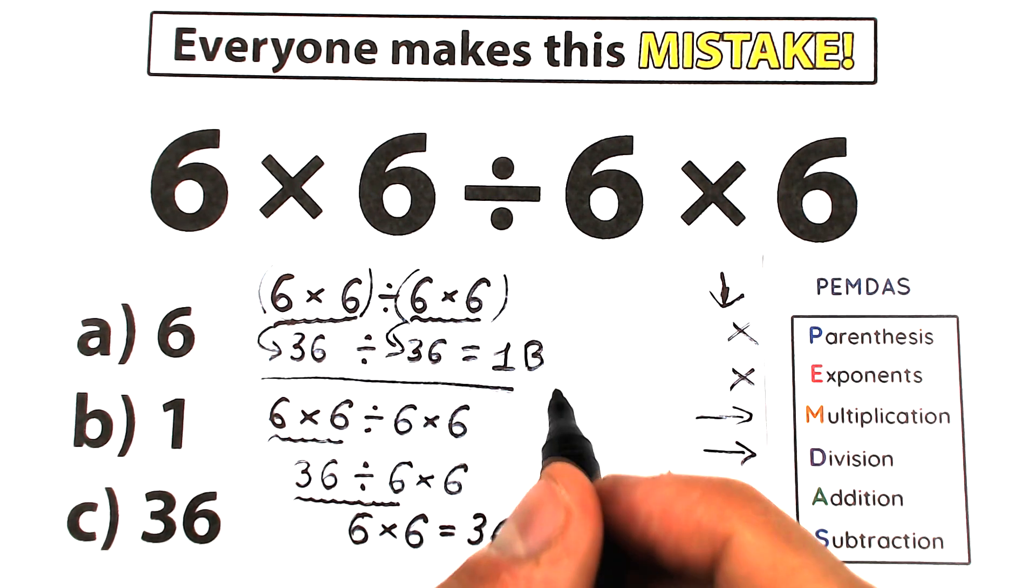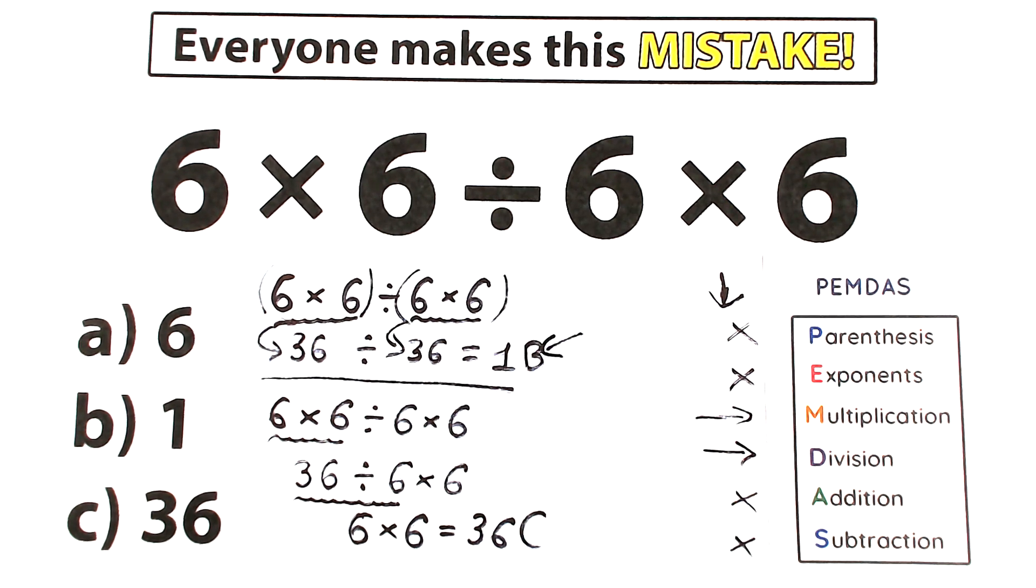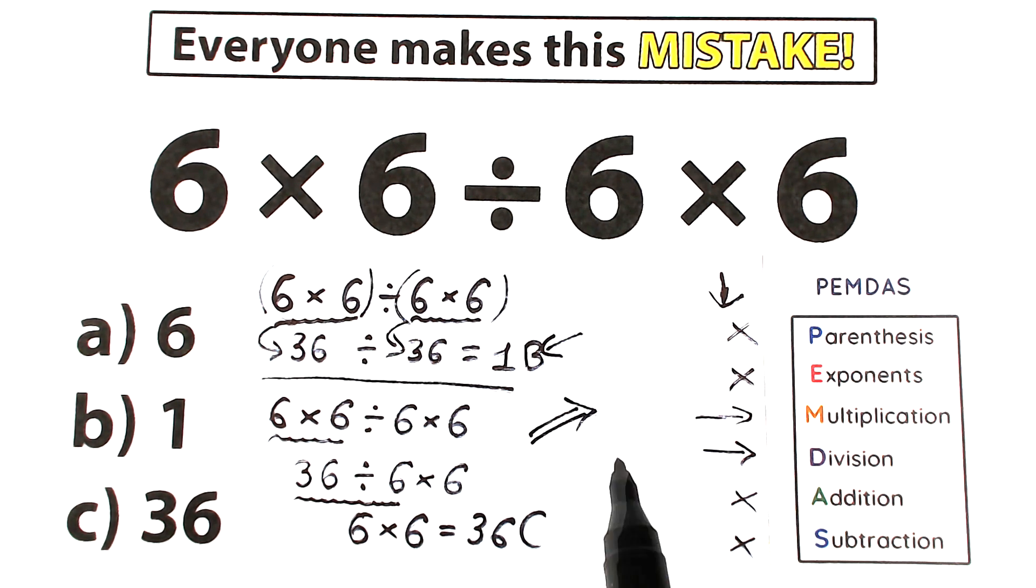So with parentheses, correct answer is option B. Without parentheses, correct answer is option C, and this is our case. We don't have parentheses, so the correct answer is option C.